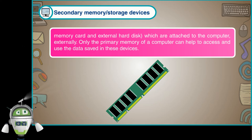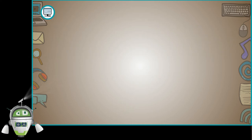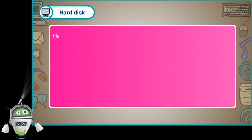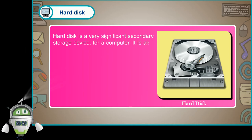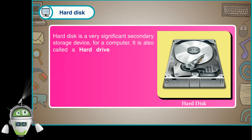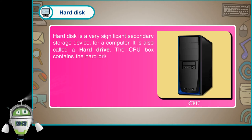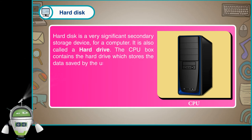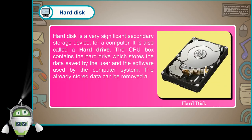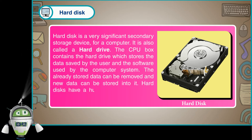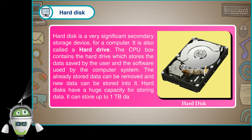Hard disk is a very significant secondary storage device. It is also called a hard drive. The CPU box contains the hard drive, which stores data saved by the user and the software used by the computer system. Already stored data can be removed and new data can be stored. Hard disks have a huge capacity and can store up to one TB of data.